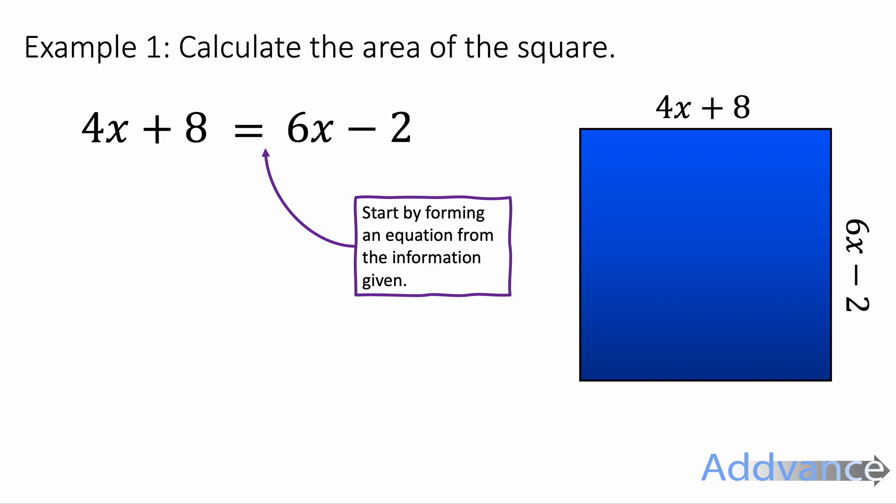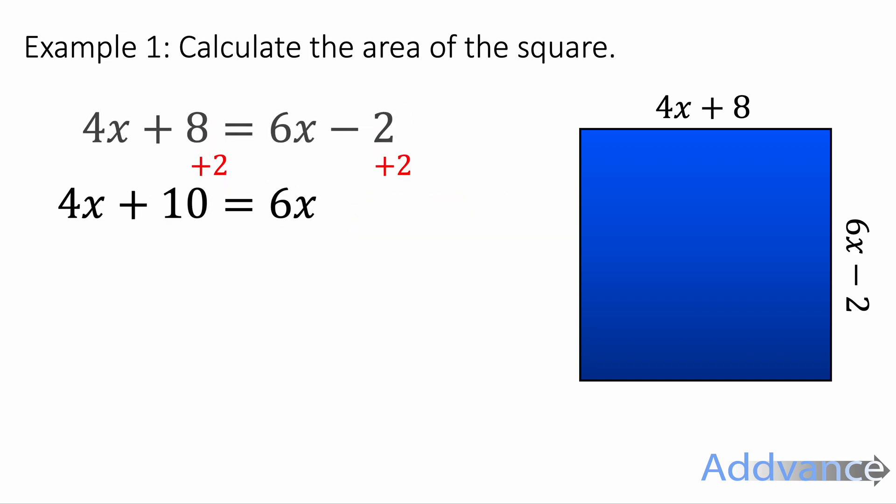The opposite of minus 2 is plus 2. We add 2 to both sides and we get 4x plus 10 is equal to 6x. Then we take 4x off both sides and we get 10 equals 2x.